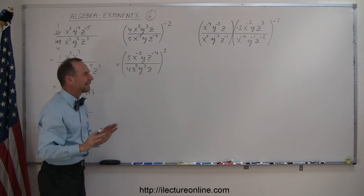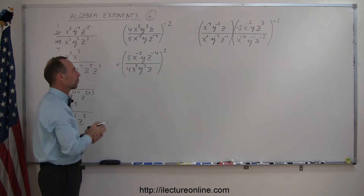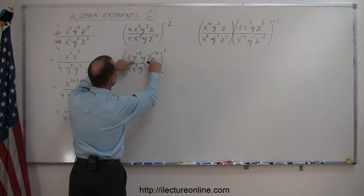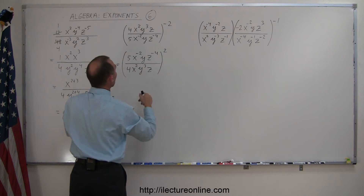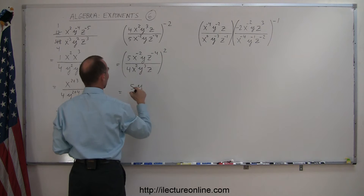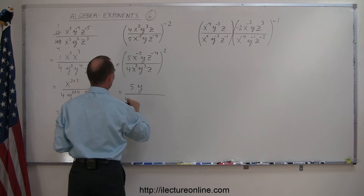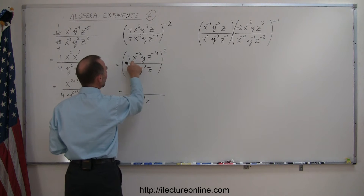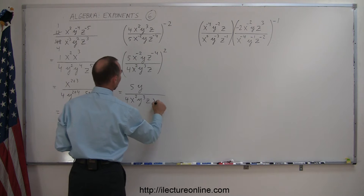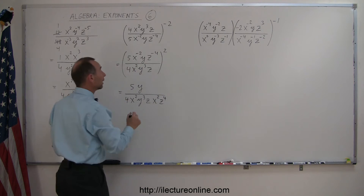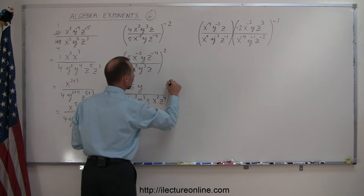We don't have to do that, but negative exponents are not fun to work with, so I like to get rid of them first. Next, I'm going to move those two down to the denominator and turn them into positive exponents. So this becomes 5, y stays because it has a positive 1 exponent, divided by 4x², y³, z — those are all positive exponents — and then the x⁻² and z⁻⁴ come down, becoming x² and z⁴. The whole thing is still raised to the second power.